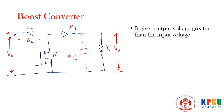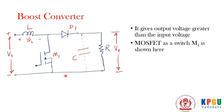In different configurations, different switches can be used in this DC-DC regulator — you can use a MOSFET, IGBT, or BJT as a switch. Here a MOSFET is shown as the switch; it can be turned on by applying a gate signal. This is the arrangement, and the load is connected across which we get the output voltage greater than the supply voltage Vs.